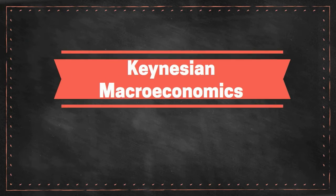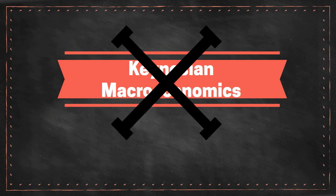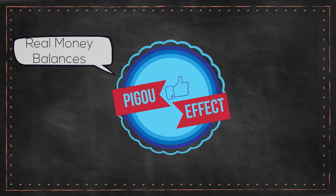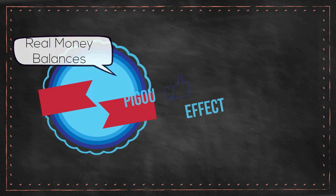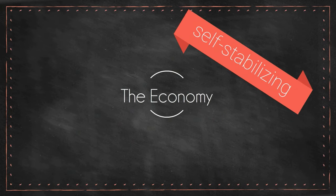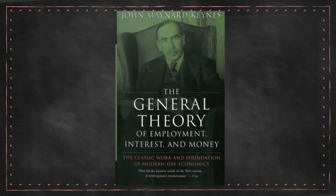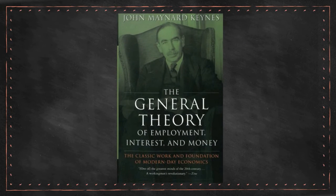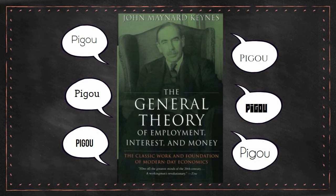Pigou was very critical of Keynesian macroeconomics and developed the idea of the Pigou effect on real money balances to argue that the economy would be more self-stabilizing than Keynes proposed. Keynes in turn was very critical of Pigou, mentioning him at least 17 times in the General Theory of Employment, Interest and Money.